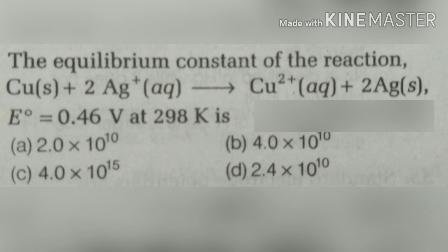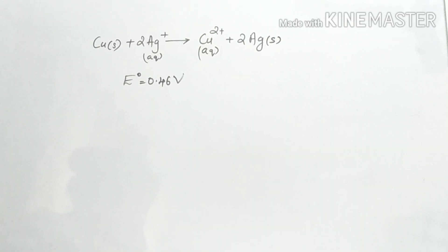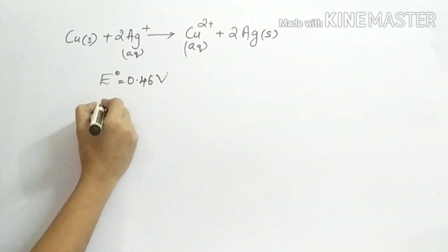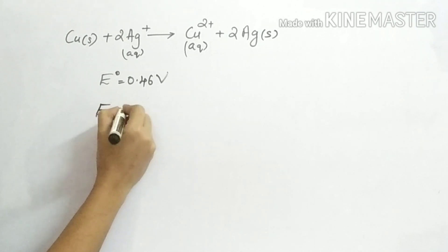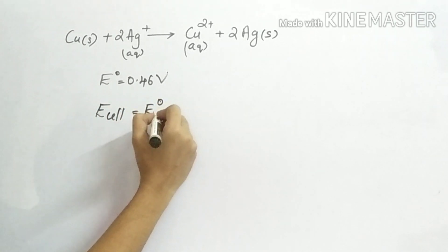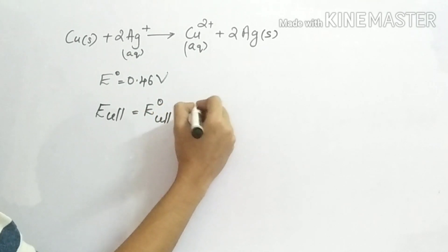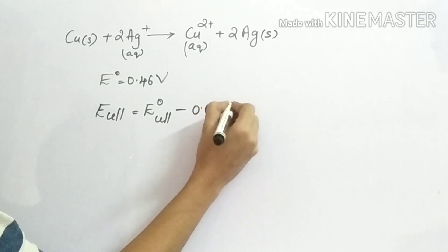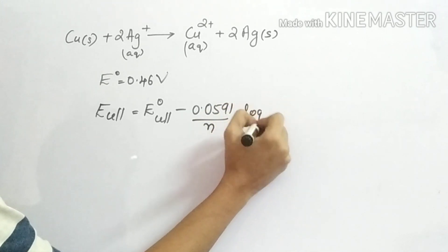The next question: the equilibrium constant of the reaction Cu plus 2Ag+ gives Cu2+ plus 2Ag, where E0 is 0.46 V at 298 Kelvin. Find the equilibrium constant of the reaction. E0 equals 0.0591 divided by N times log K.